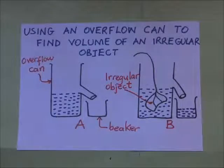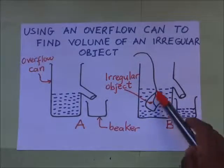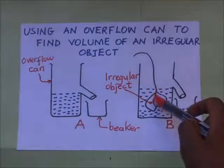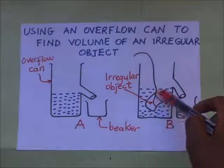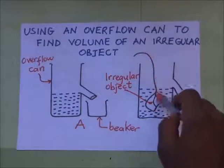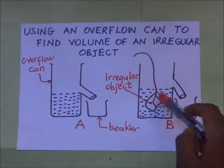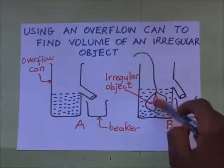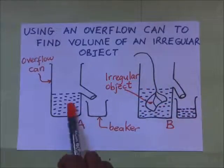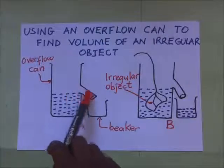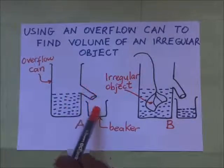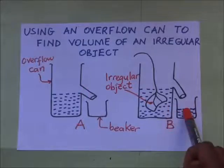Then we get our irregular object, tie it on a string, and slowly insert and immerse it into the water. As you put this irregular object into the water, it is going to displace some water. When it displaces some water, the water flows via the spout and moves into the beaker, as seen in diagram B.